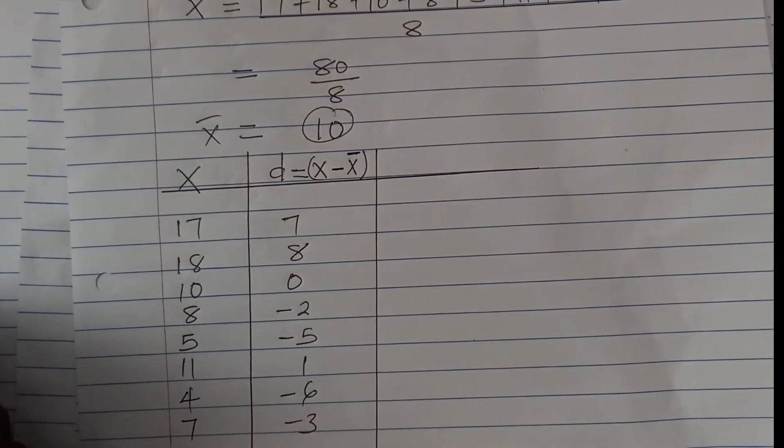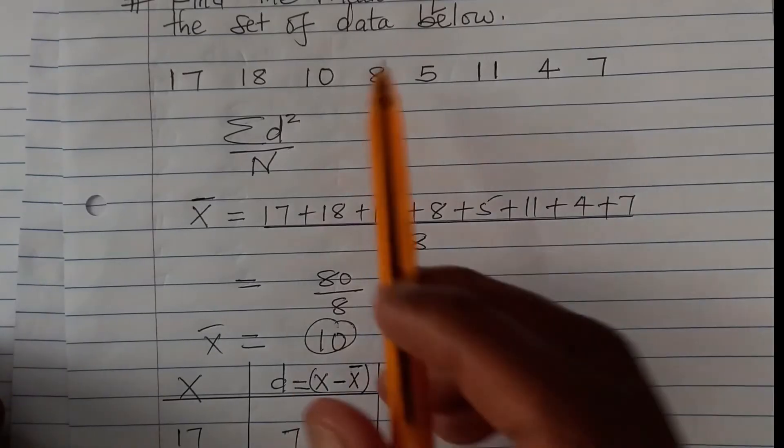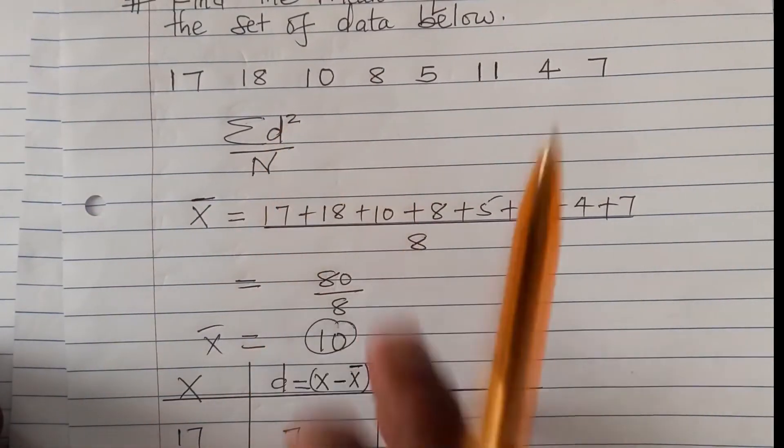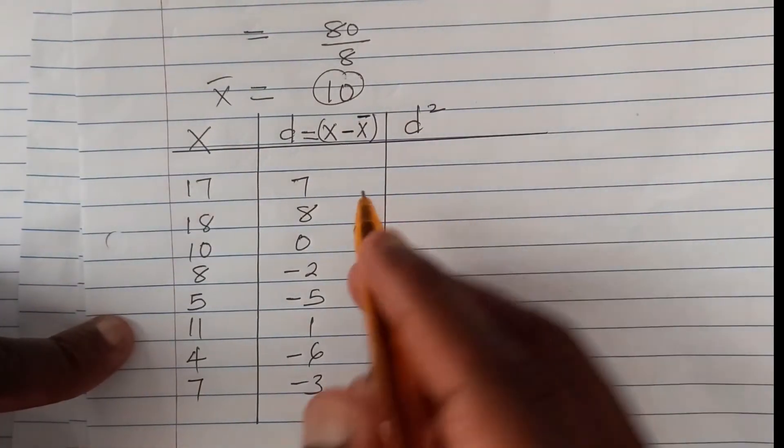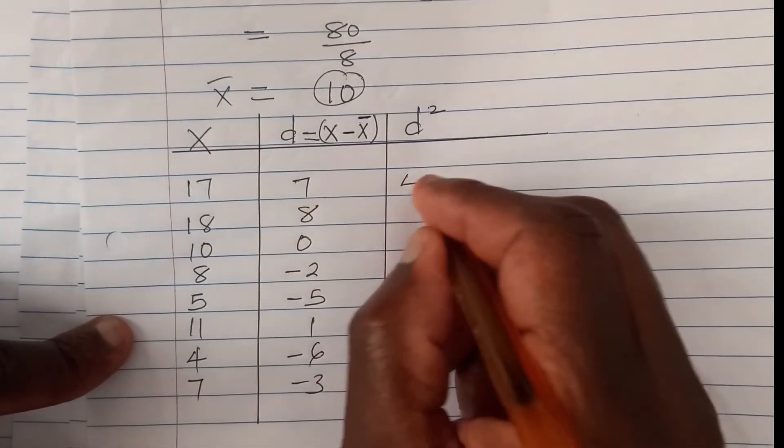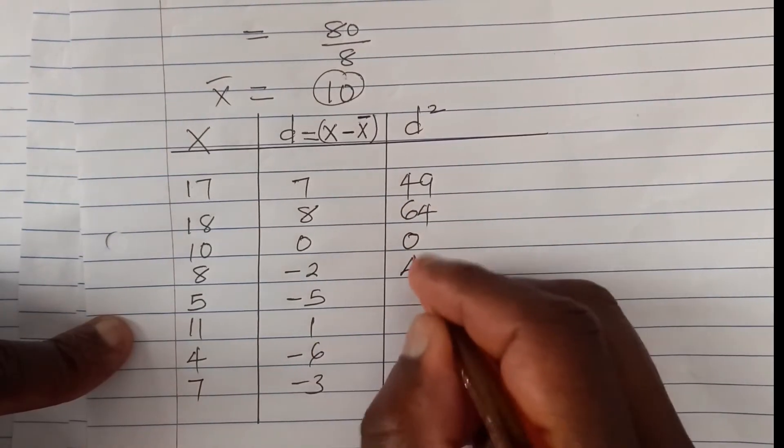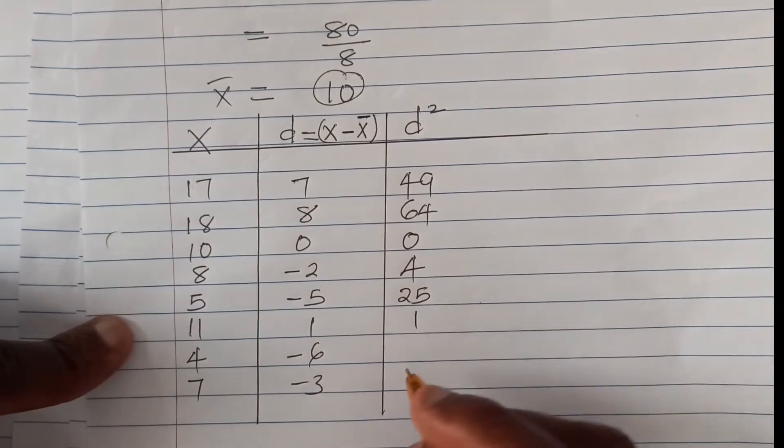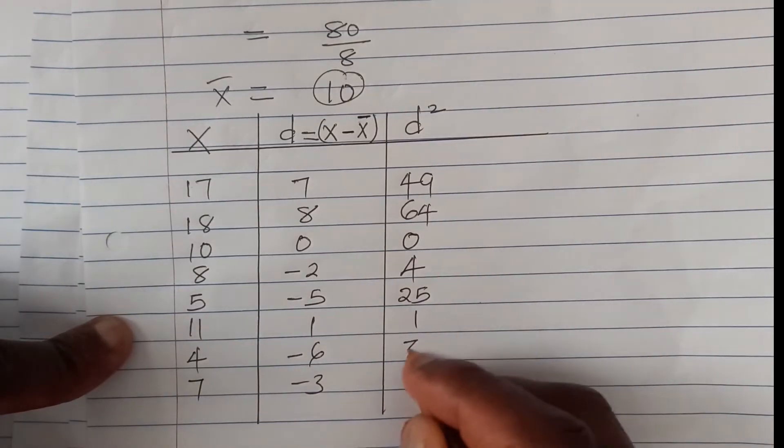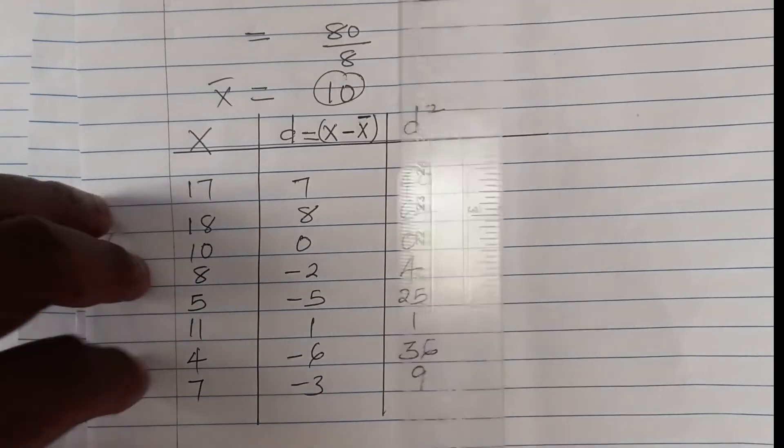So once we get that, now we have d. We need to, from the formula, get the deviation squared. So we're going to introduce a column here, deviation squared. So we square this: 7 squared is 49, then 8 squared, 64. 0 squared, 0. Negative 2 squared is 4. Negative 5 squared is 25. 1 squared is 1. Negative 6 squared is 36. Then negative 3 squared is 9.